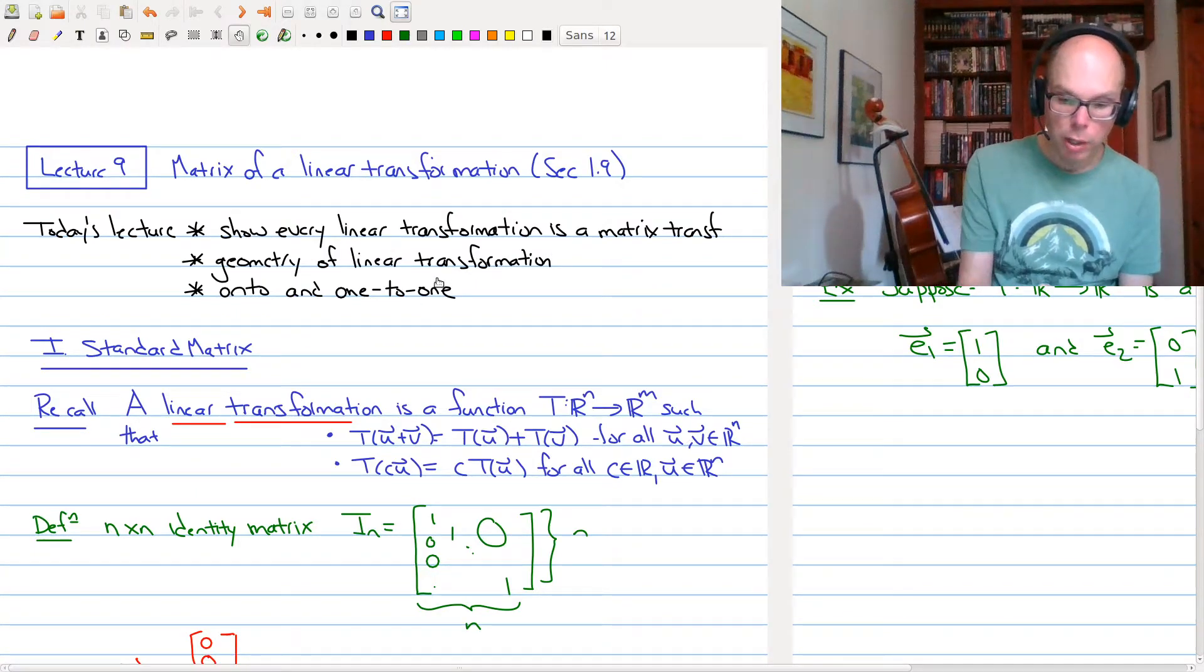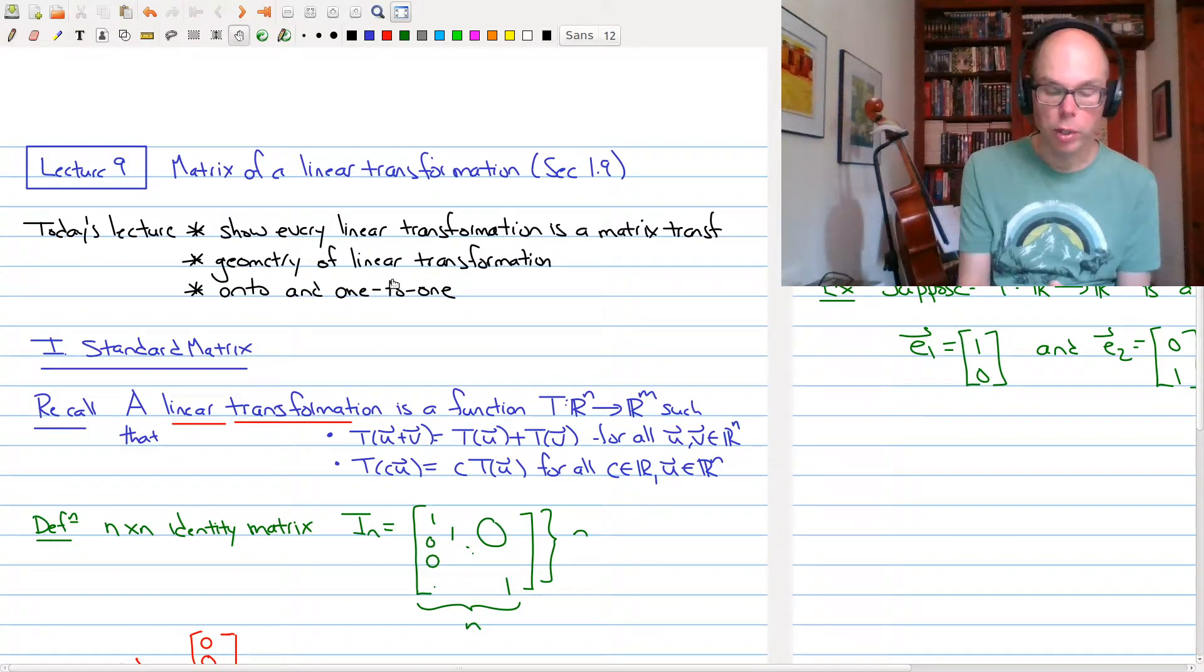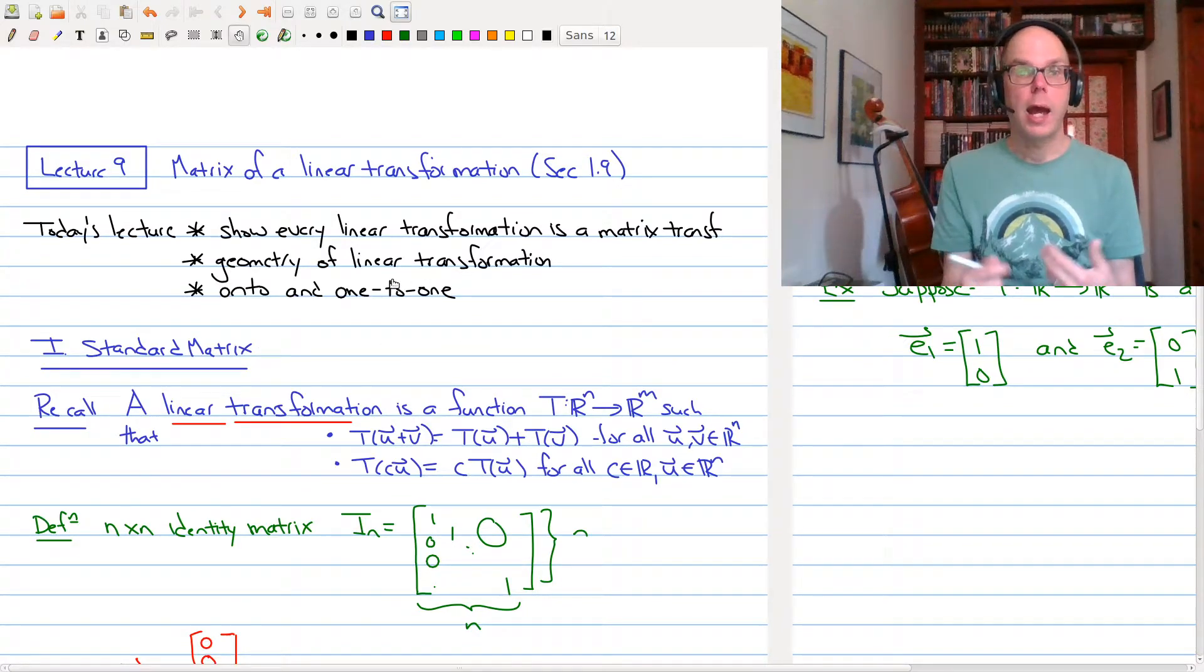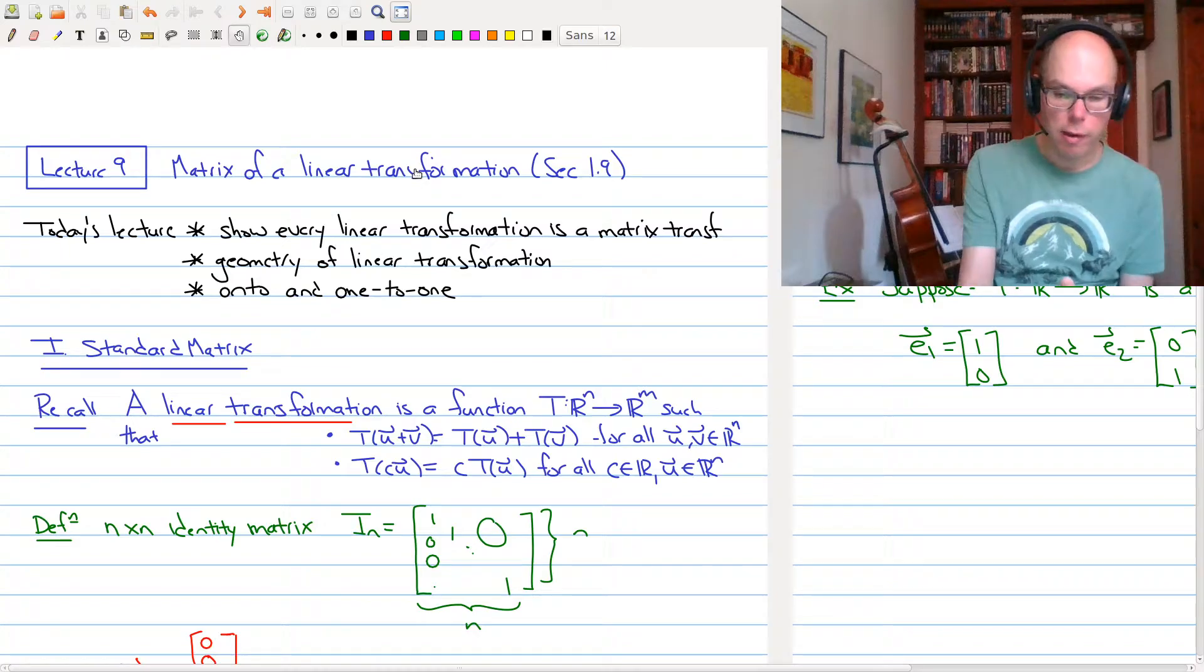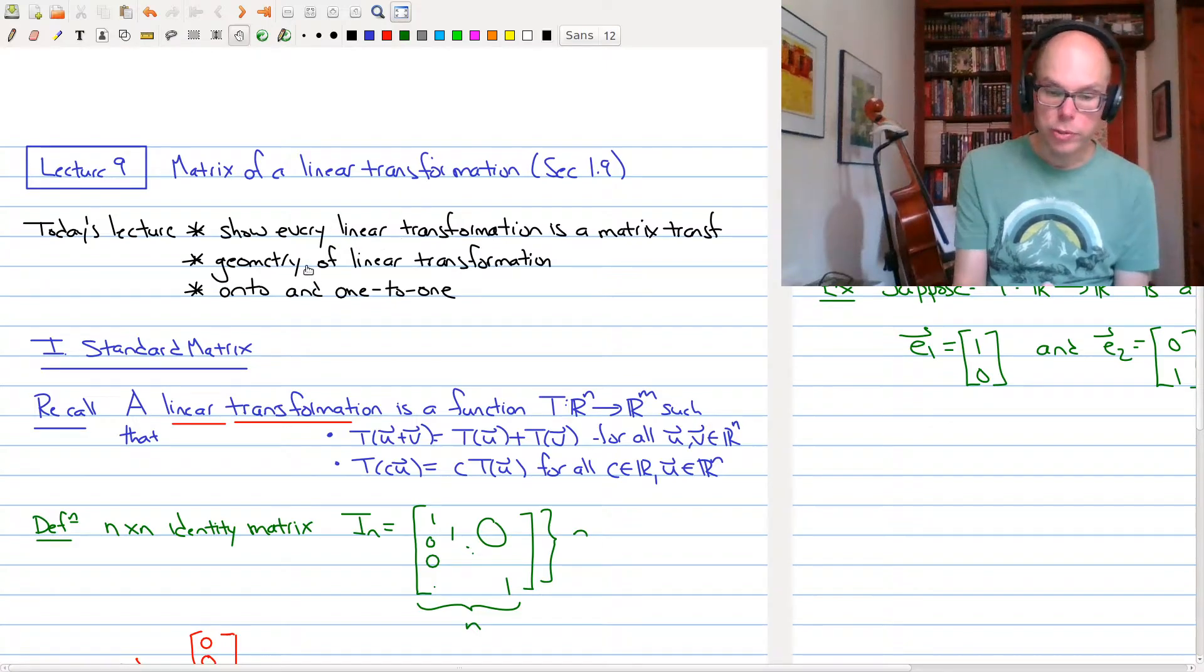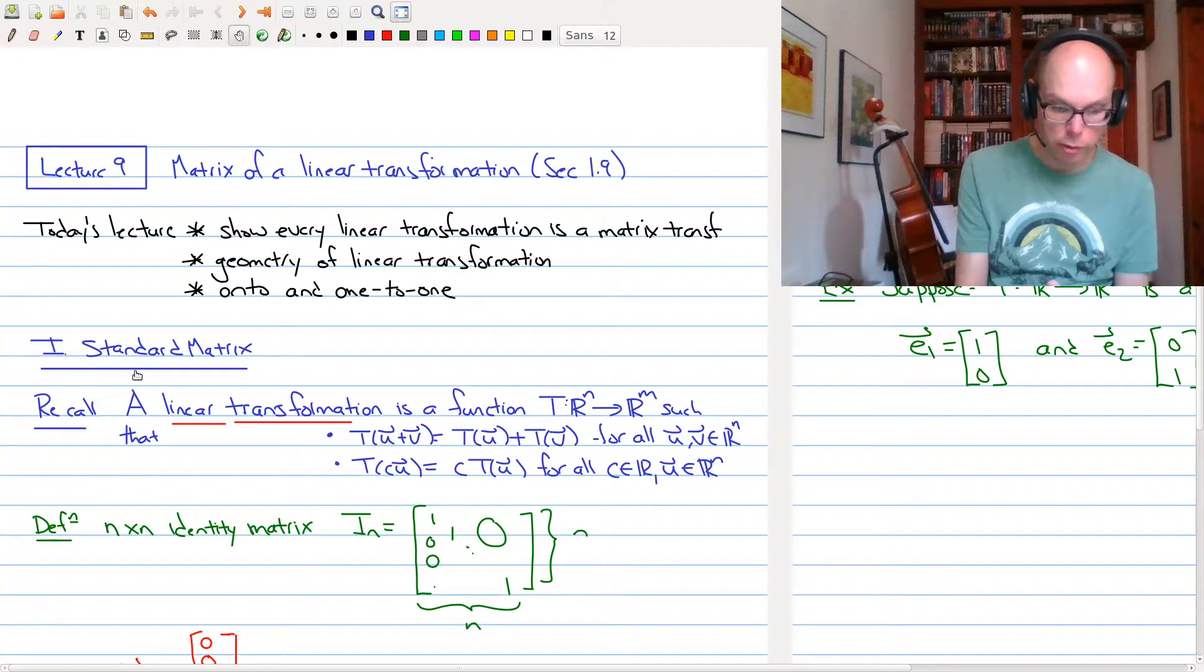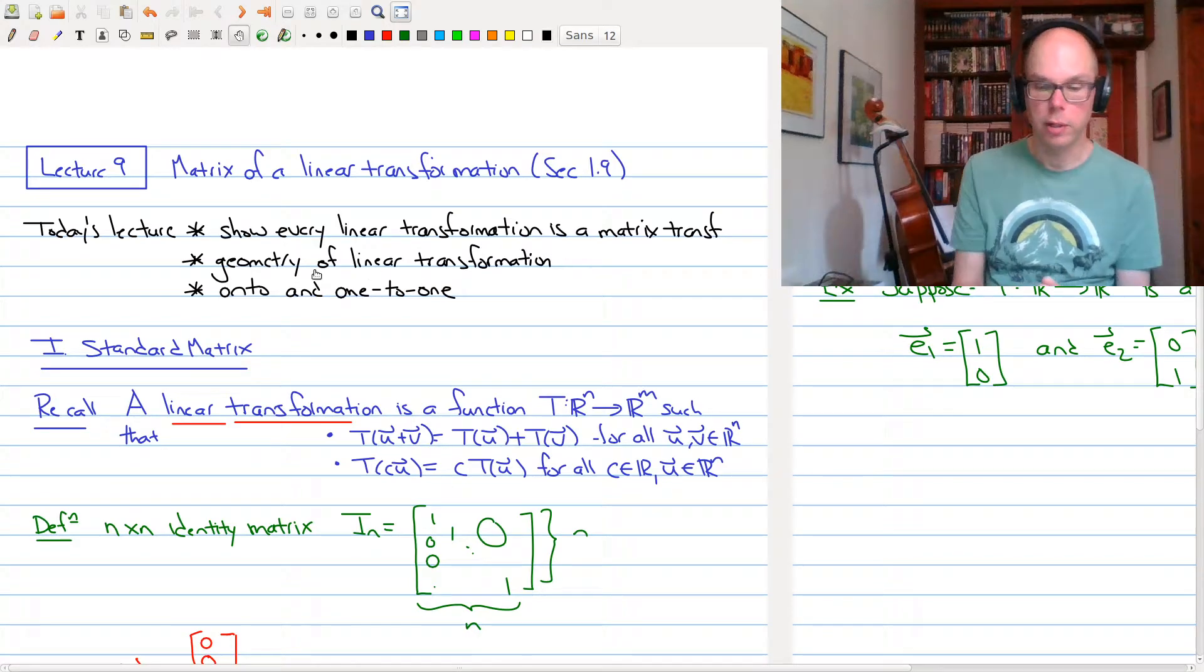And then the last part of the lecture we want to look at these properties of a transformation: onto and one-to-one, and we want to say how can we determine whether a linear transformation has these particular properties. As we'll see, once you have a linear transformation you can attach to it a matrix, which is what we call the standard matrix, and the standard matrix here encodes this particular information.